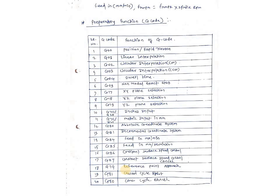G90 and G91: G90 is basically used for the absolute coordinate system, and G91 is for the incremental coordinate system. While making a program, which coordinate system we are going to use is most important. Before starting the program, we have to mention the coordinate system — whether you are going to use absolute or incremental. We will see in the next lecture what absolute and incremental mean.